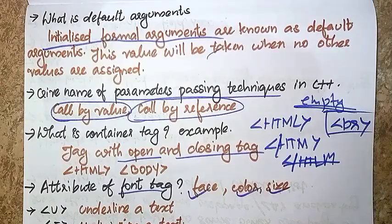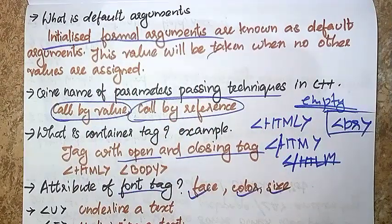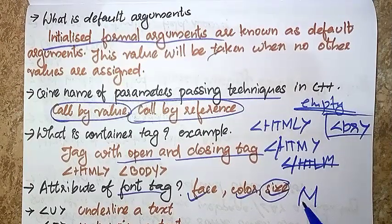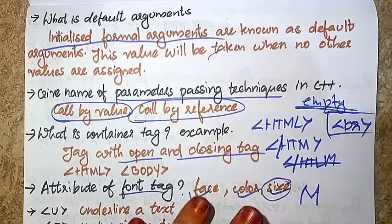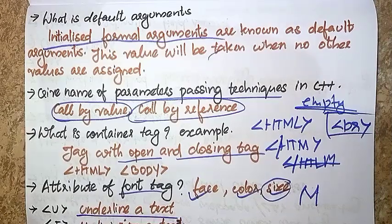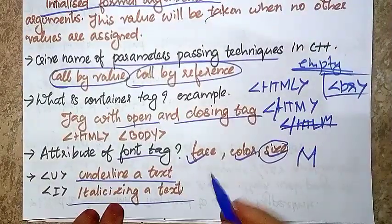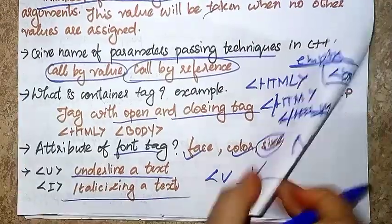HTML font tag attributes: Face, Color, Size. The font tag is called the face, then color, then size. Then I use the I tag for italic and underline text.